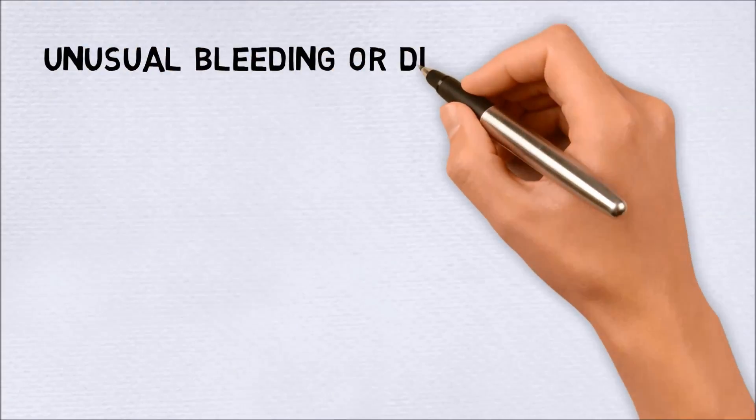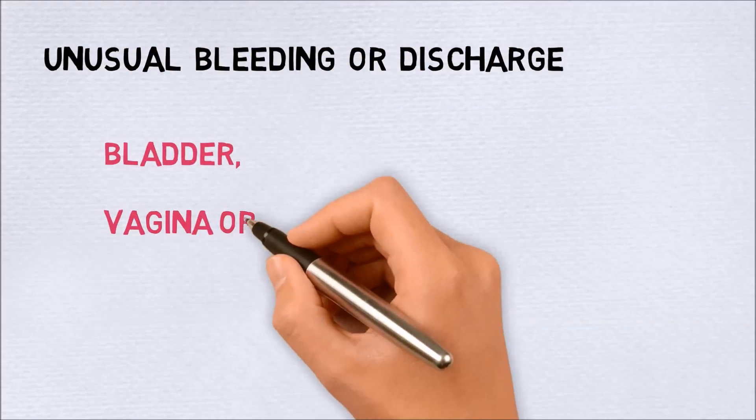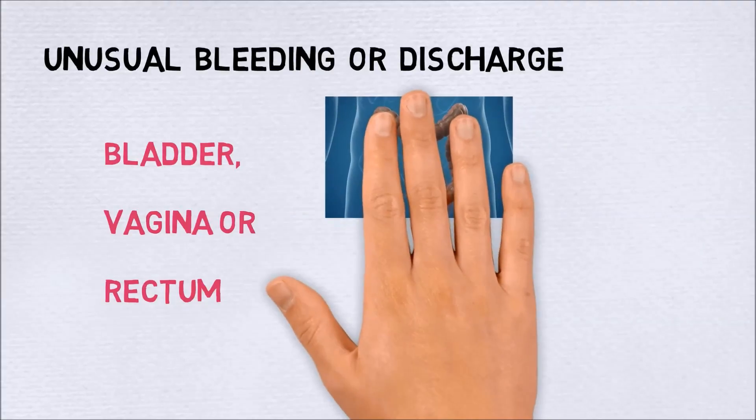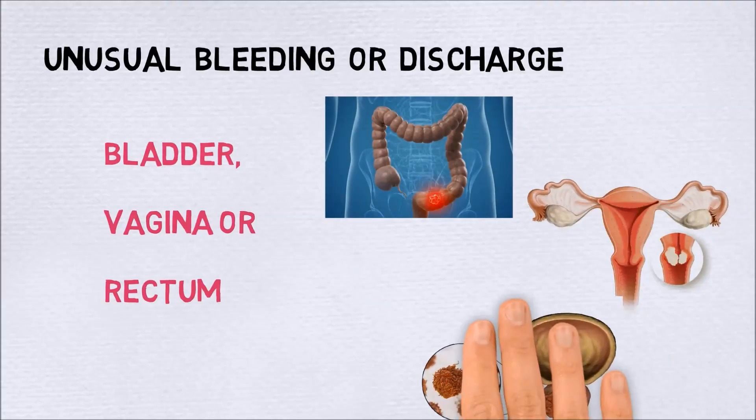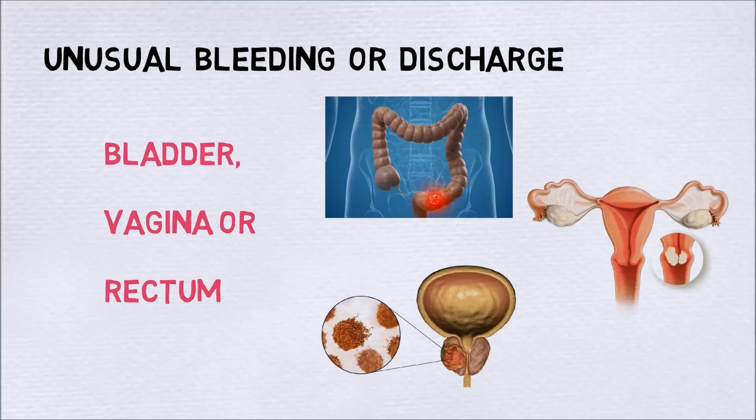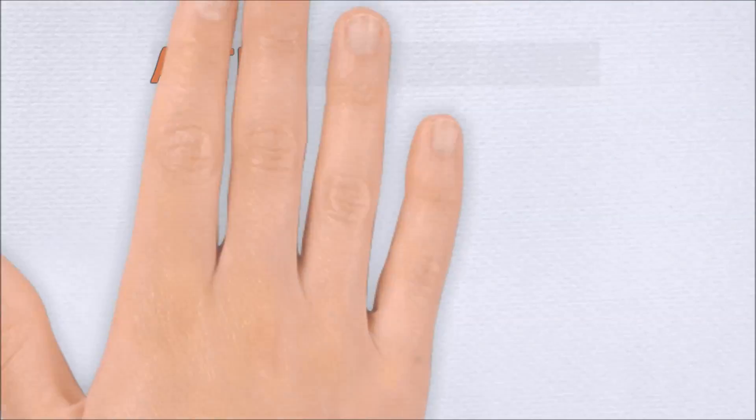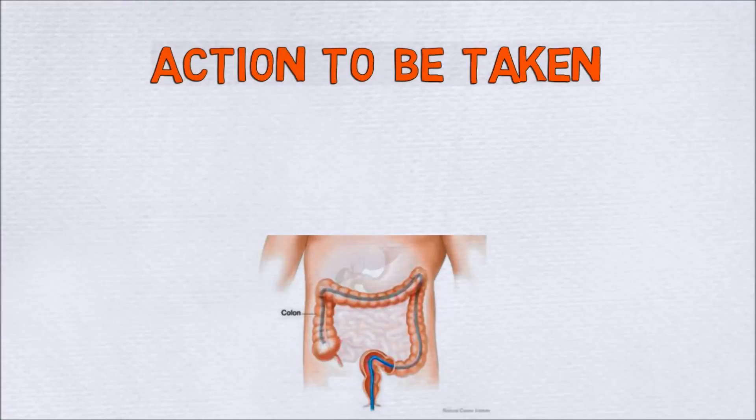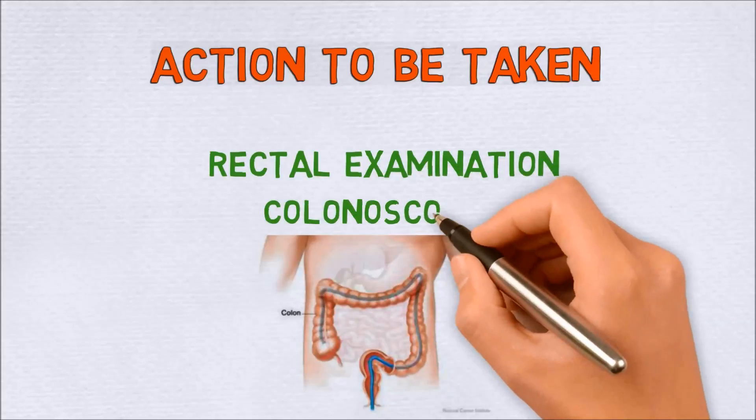Unusual bleeding or discharge from the bladder, vagina or the rectum are signs of colorectal, cervical or prostate cancer and must not be neglected. Actions to be taken are a complete rectal examination and colonoscopy.